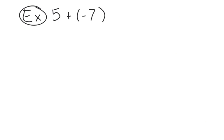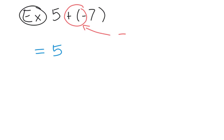In our very first question, we have five plus negative seven. The first thing you'll notice is that we have two signs beside each other, and we actually want to simplify this. If you remember back to our previous slide, when you have a positive sign with a negative sign, that actually simplifies into a negative sign. So let's rewrite this question as five subtract seven.